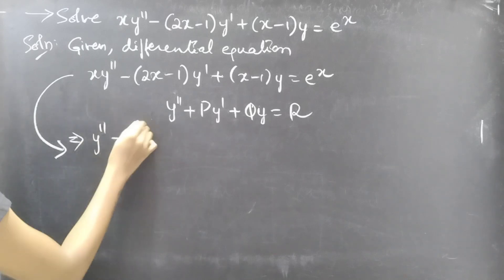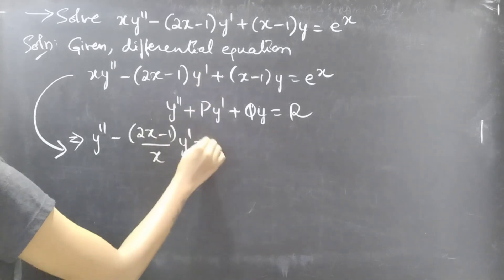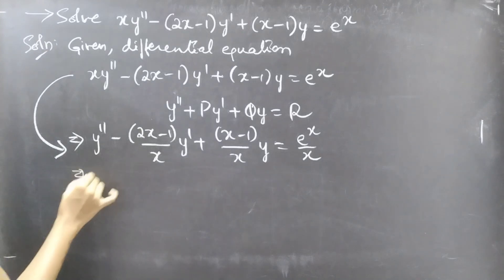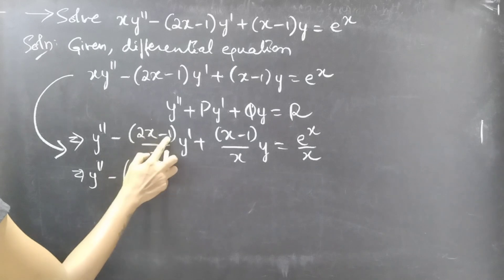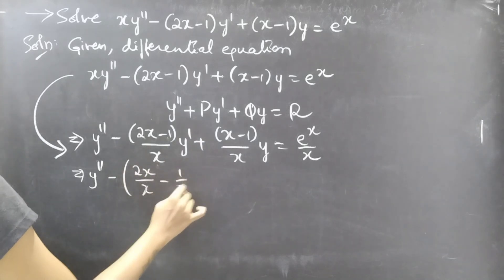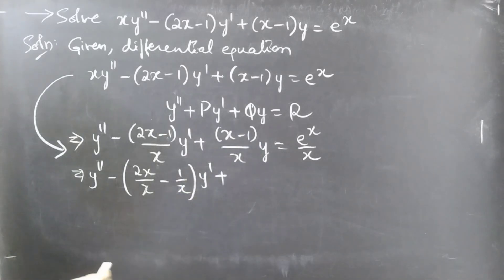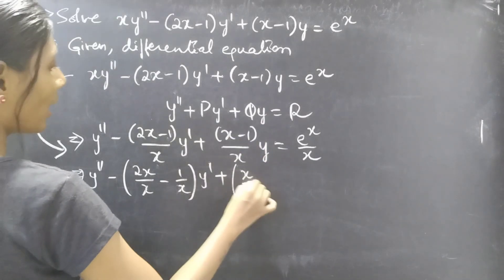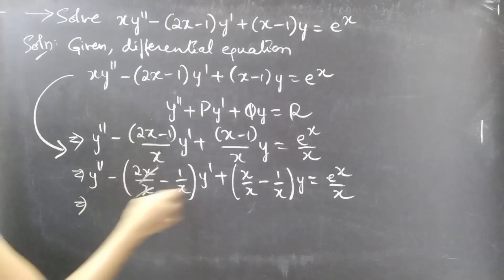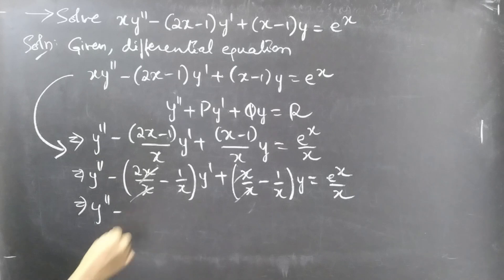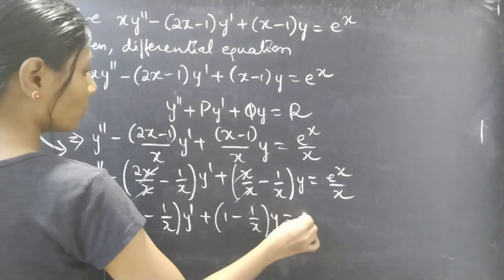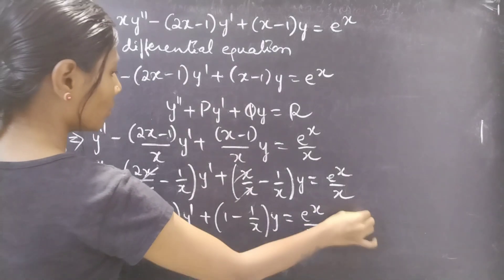After dividing by x, we get y'' − (2x−1)/x · y' + (x−1)/x · y = e^x/x. Since we have two terms in the numerator over one denominator, we split the fractions to get y'' − (2 − 1/x)·y' + (1 − 1/x)·y = e^x/x. Consider this as equation number 1.